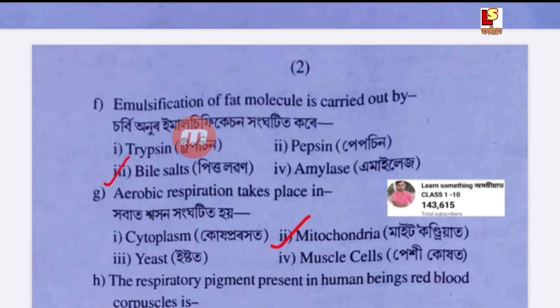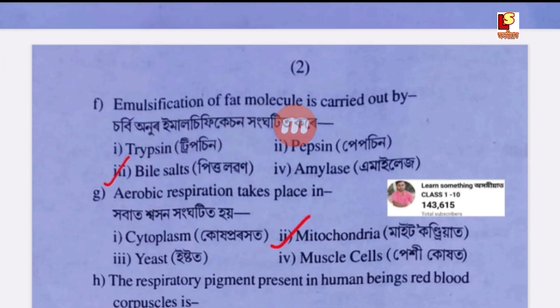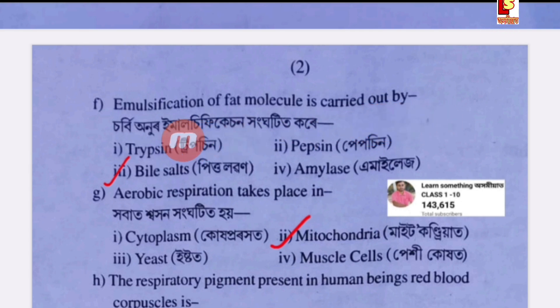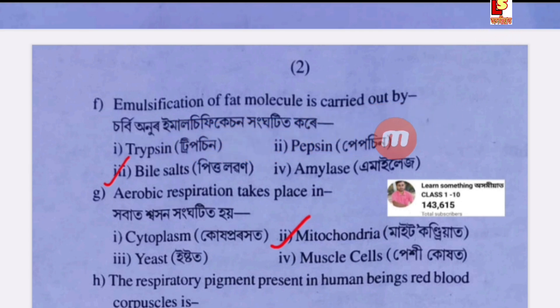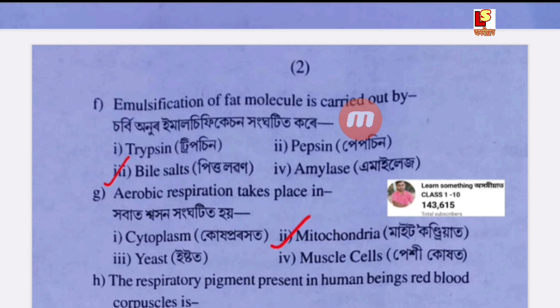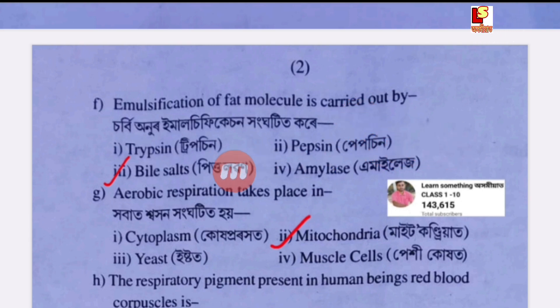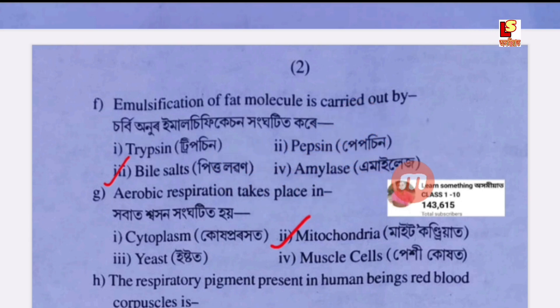Emulsification of fat molecules is carried out by — Option A: trypsin. Option B: pepsin. Option C: bile salts (pittolabon). Option D: amylase.